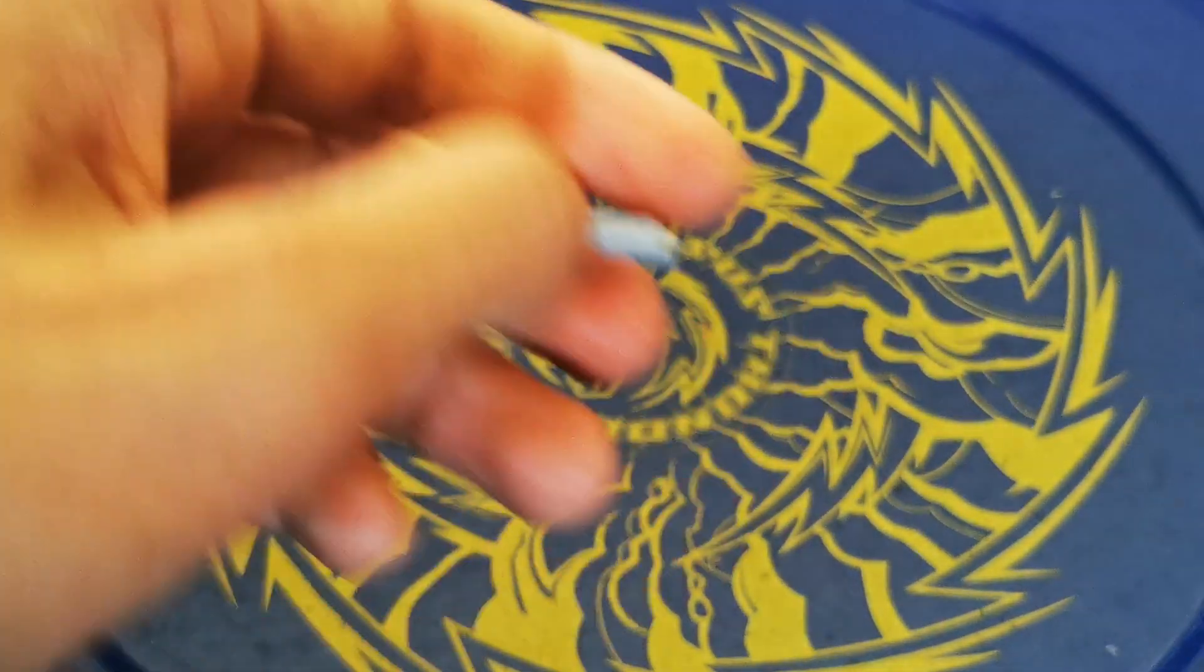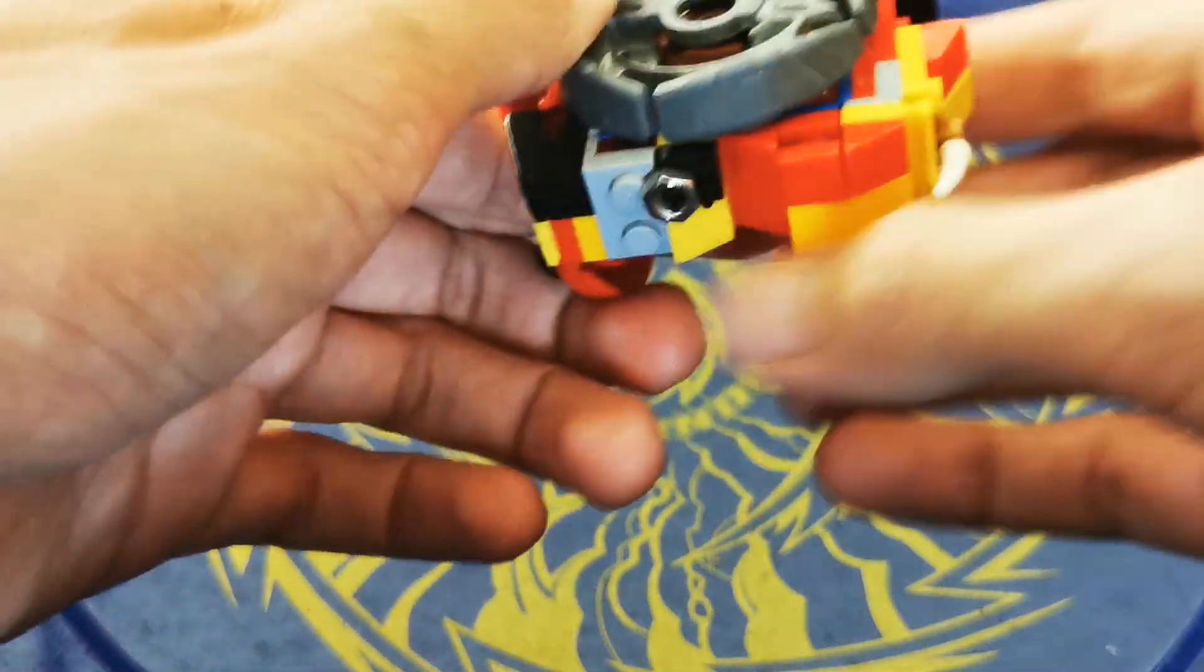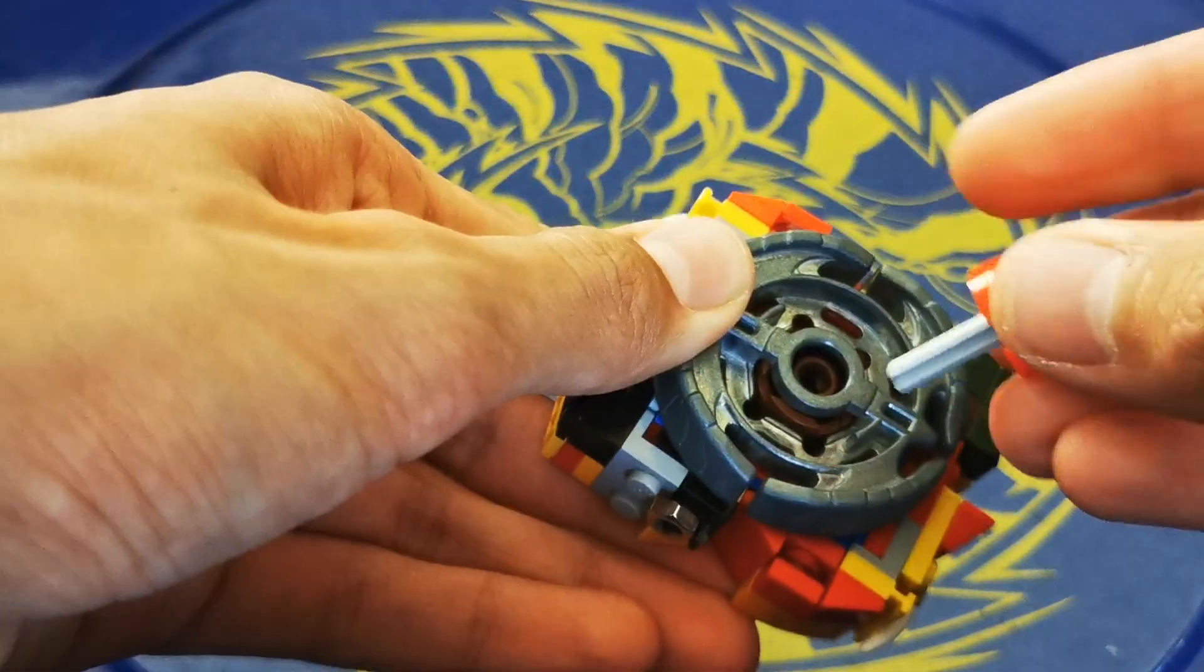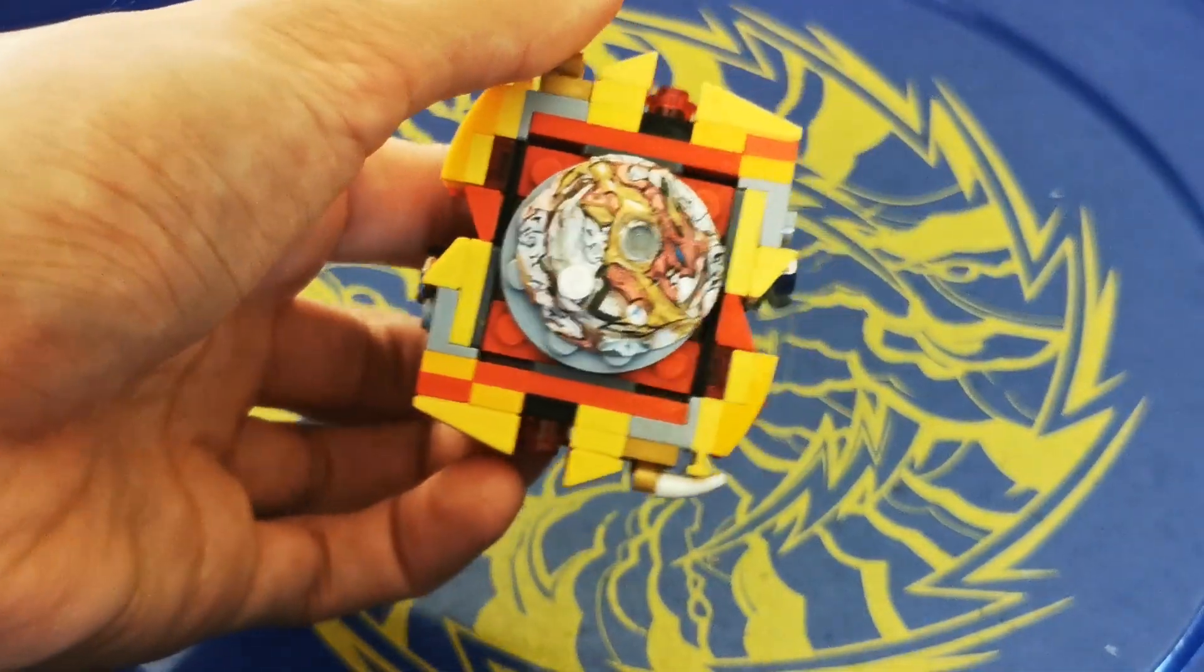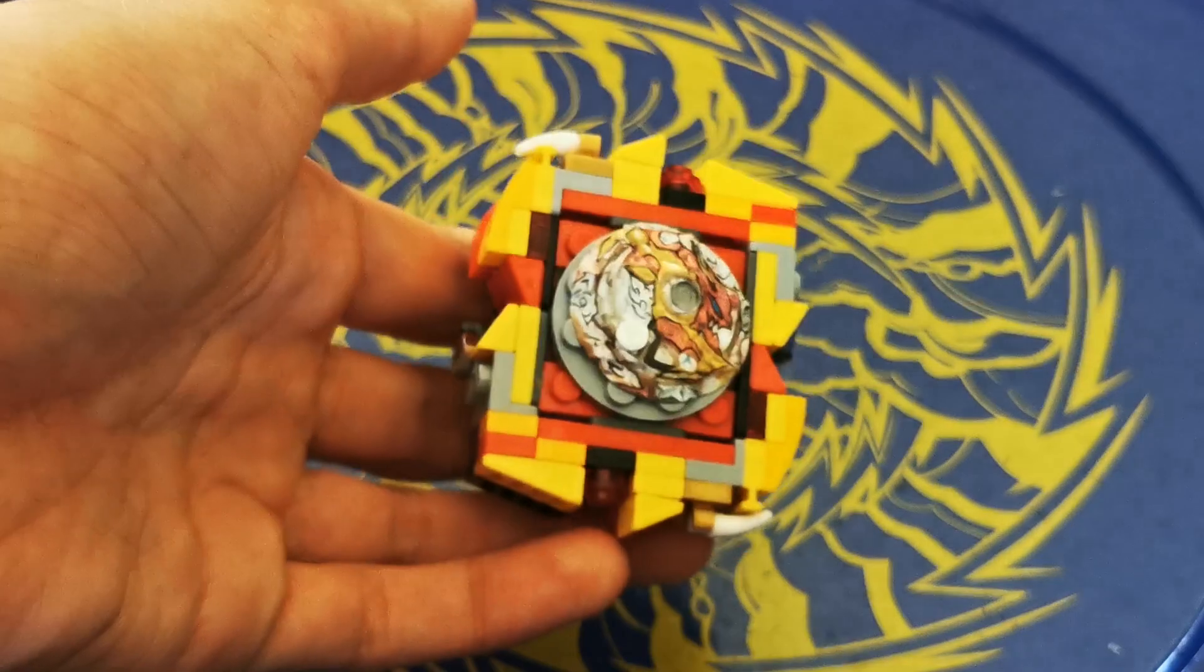Then to assemble the Beyblade, grab all three parts. Face this part down that way, and then put the axle through there. And that's Lego Burst Spryzen.